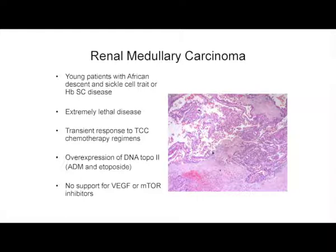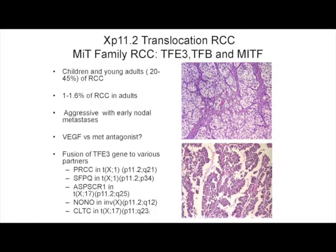Renal medullary carcinoma occurs in young patients of African descent with sickle cell trait or hemoglobin SC disease. It's an extremely lethal disease. Some transient responses to chemotherapies for transitional cell carcinoma have been seen. Since there is some overexpression of DNA topoisomerase 2, it's been thought that adriamycin and etoposide might be useful, and we don't have any support for the use of VEGF or mTOR inhibitors in this disease.